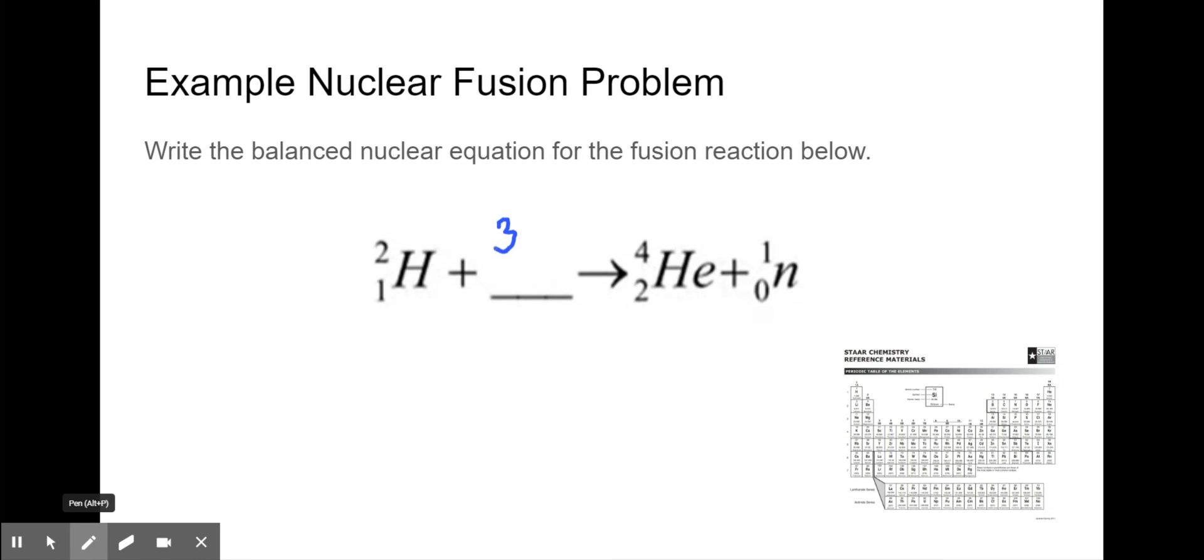On the bottom over here, I have two protons. So I need two protons on the reactant side. So one plus one is two. So this would be a hydrogen and a tritium creating helium, just like in our last diagram.